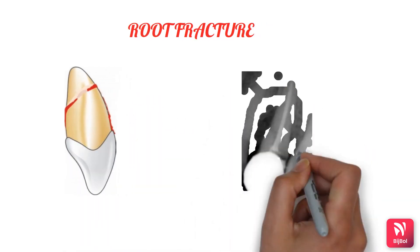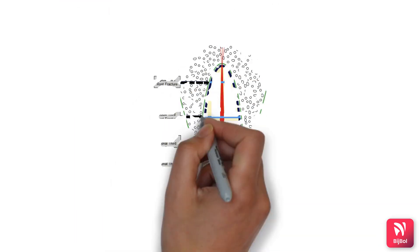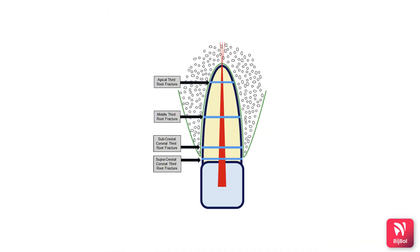These fractures usually result from horizontal impact and are transverse or oblique in nature. They are mostly seen in mature roots and are least common in incompletely formed roots. Based on the level of fracture, they are classified into apical third, middle, and coronal third root fractures.